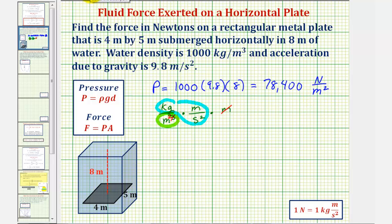And now from here we can find the total force on the plate, F, which is equal to P times A, we just found P, 78,400 newtons per meters squared, times the area of the plate. Well four meters times five meters is 20 meters squared. And this product comes out to 1,568,000.